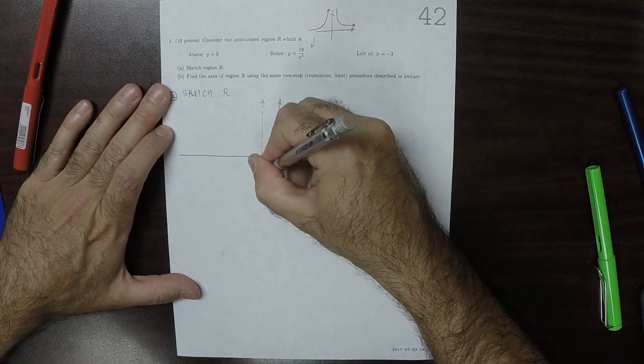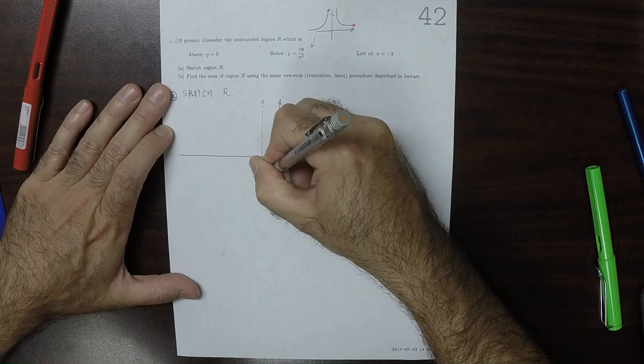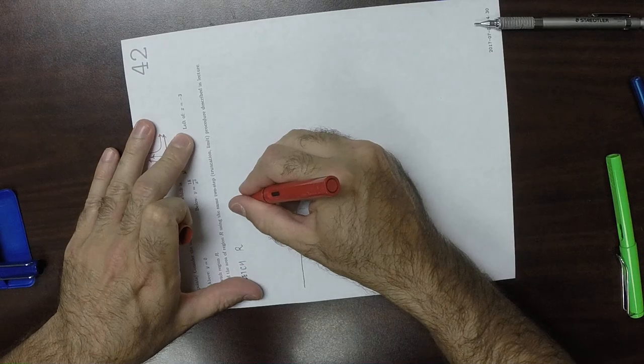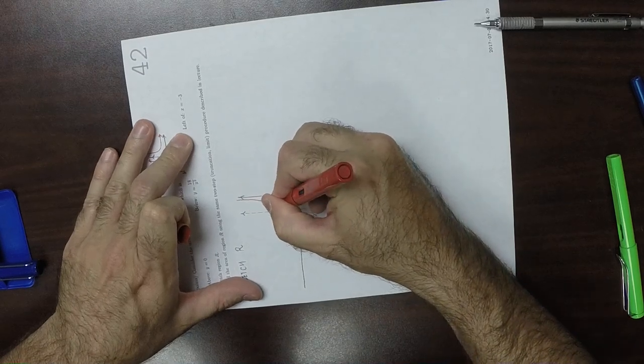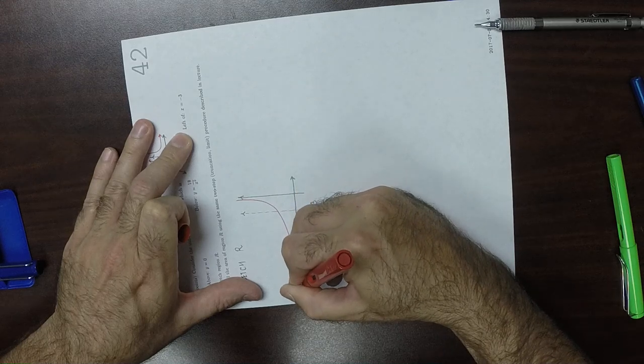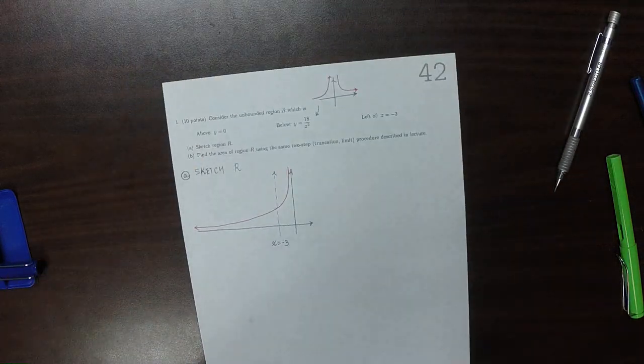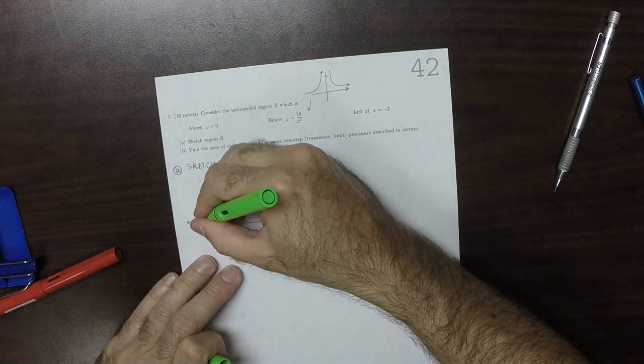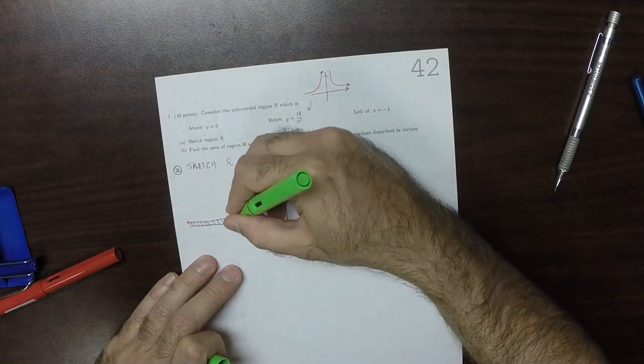So this is, x is negative 3. And then, so the region R that we're interested in is this region.